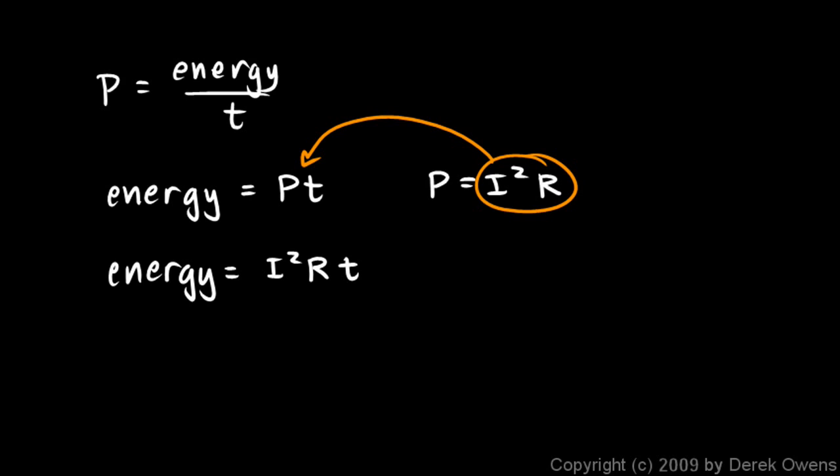And since this energy all becomes heat, it's commonly written like this. Q is I squared Rt, where we use Q for heat. You remember in an earlier chapter when we dealt with heat, we used Q for heat. And think of Q as quantity, the quantity of heat. But this is a little unfortunate because now that we're dealing with electricity, Q, remember, is often used to represent charge. So, to avoid the ambiguity in the Q right there, it's often written like this. Just an H for heat. H is I squared Rt.